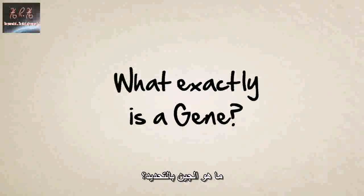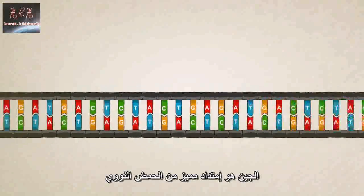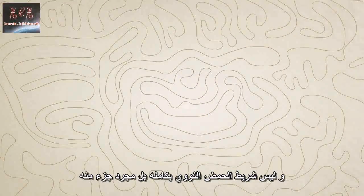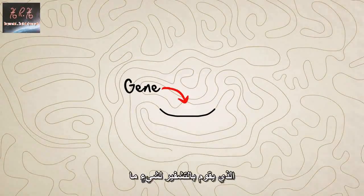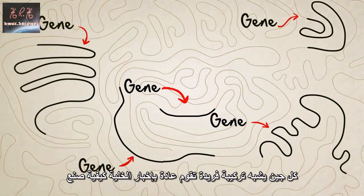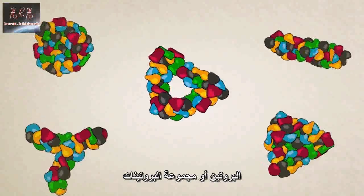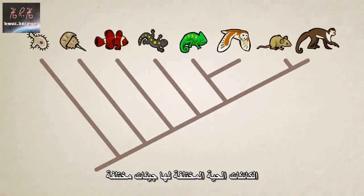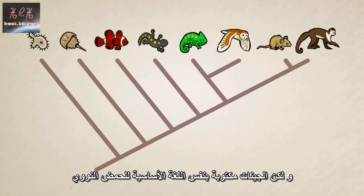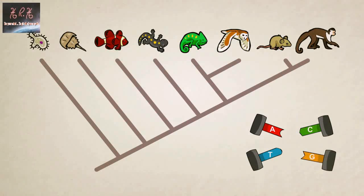So just to sum things up: what exactly is a gene? A gene is a special stretch of DNA — not the entire strand of DNA, just a segment that codes for something. Each gene is like a unique recipe, which usually tells a cell how to make a protein or a group of proteins. Different creatures have different genes, but all genes are written in the same basic DNA language of A's, C's, T's, and G's.